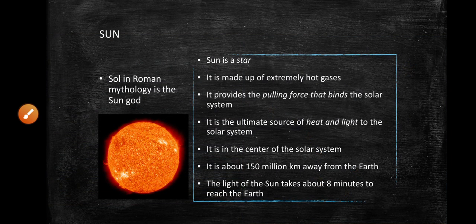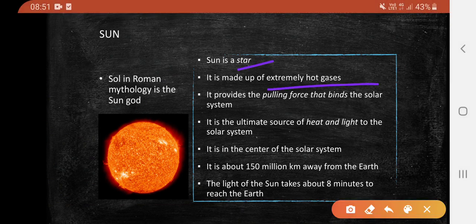Sun - Sol in Roman mythology is the sun god. The Sun is a star made up of extremely hot gases. It provides a pulling force that binds the solar system and is the ultimate source of heat and light to the solar system.